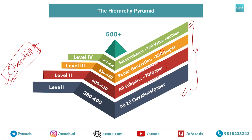These are your general levels. If you fulfill level one — completing 20 questions in three hours — you can score 380 to 400. To reach level two you need to identify and attempt all subparts, because missing subparts is a sure shot way of losing marks. Once you cover all subparts, point generation can take you up to 430 to 450.